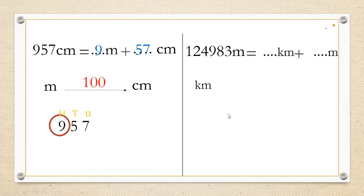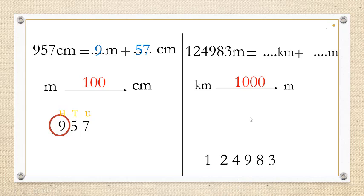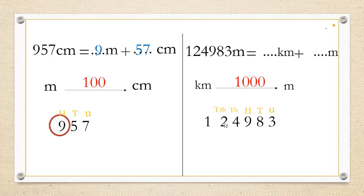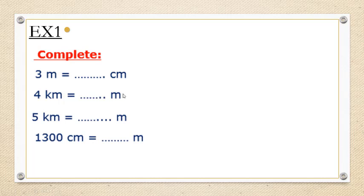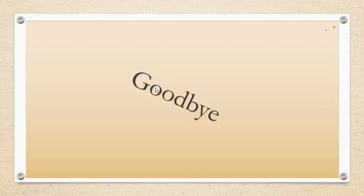The next example: we have 124,983 kilometers. Since 1 kilometer has 1,000 meters, we take the place value of thousands and higher. The place values are: units, tens, hundreds, thousands, ten-thousands, hundred-thousands. So we take 124 with kilometers and the remaining digits with meters. Now it's exercise time — try to do this by yourself. Thank you and goodbye.